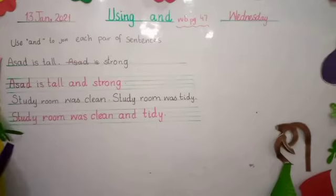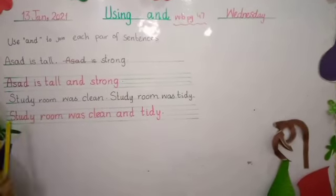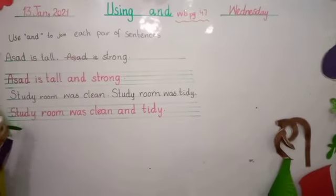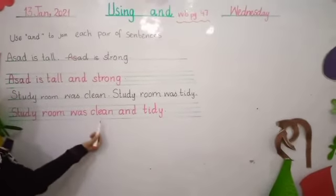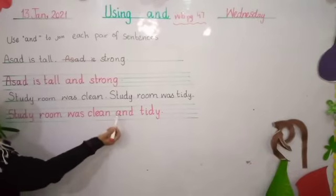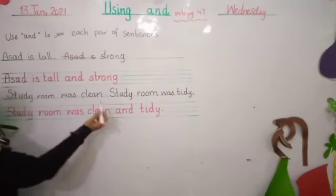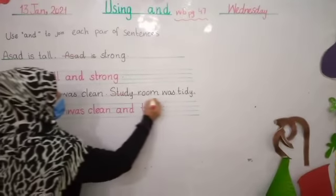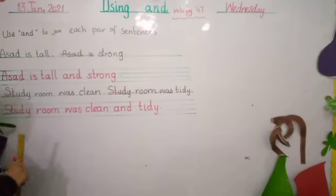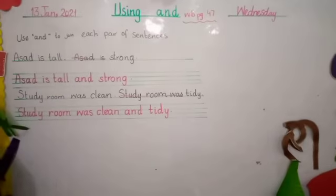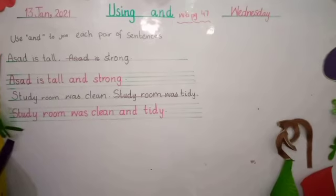The next sentence is 'Study room was clean' and 'Study room was tidy'. We will also join these with 'and'. The first sentence stays complete: 'Study room was clean', and the repeated part is cut. The result is: Study room was clean and tidy. Students, the next sentence you will have to do by yourself. Learn to do your lesson by heart and do it in very neat and clean handwriting.